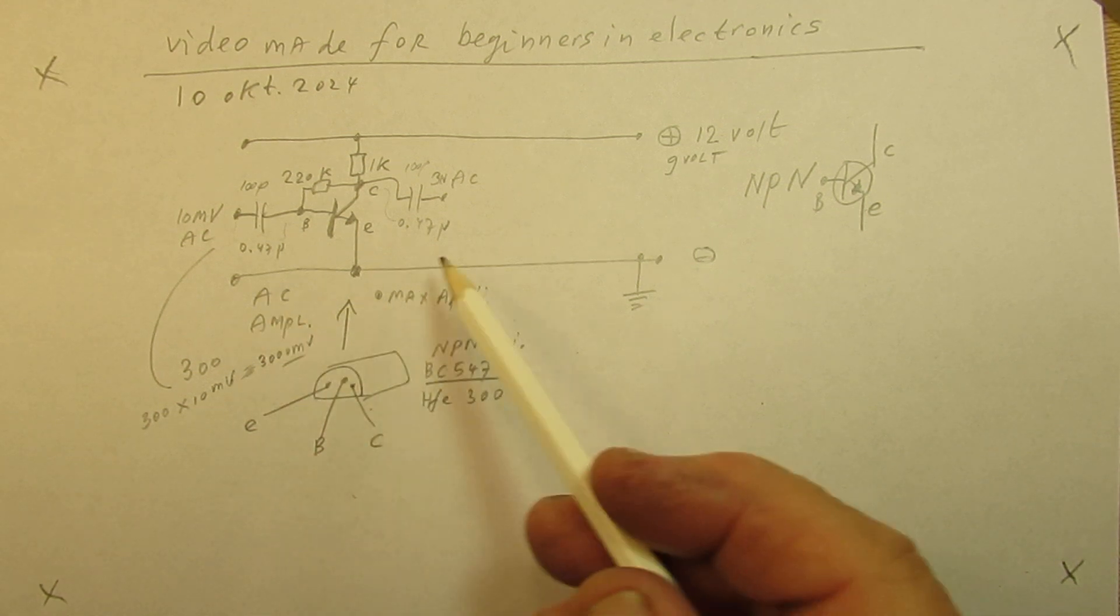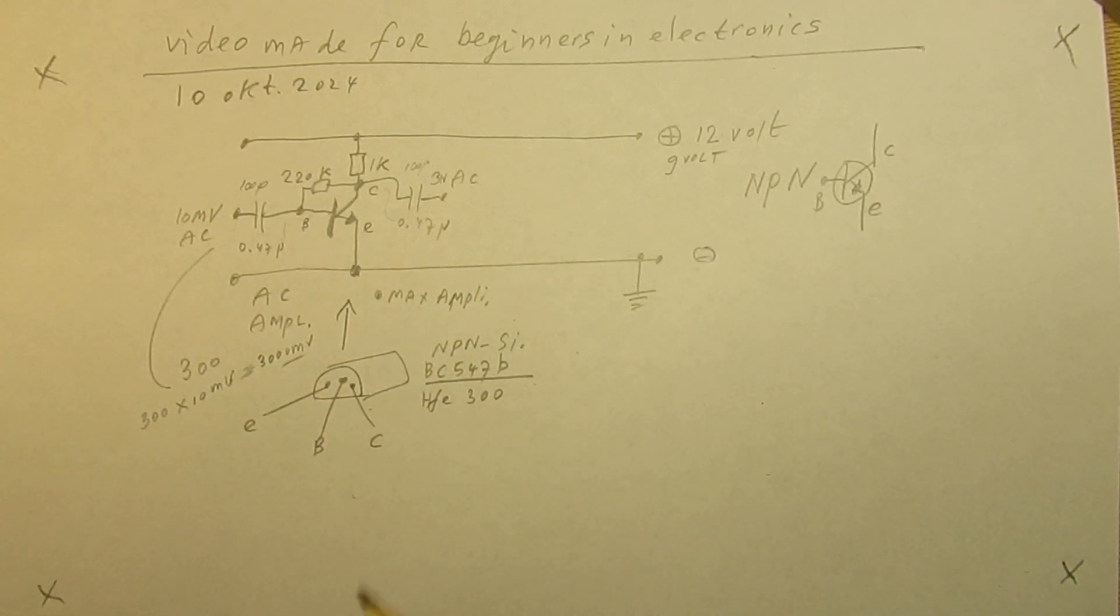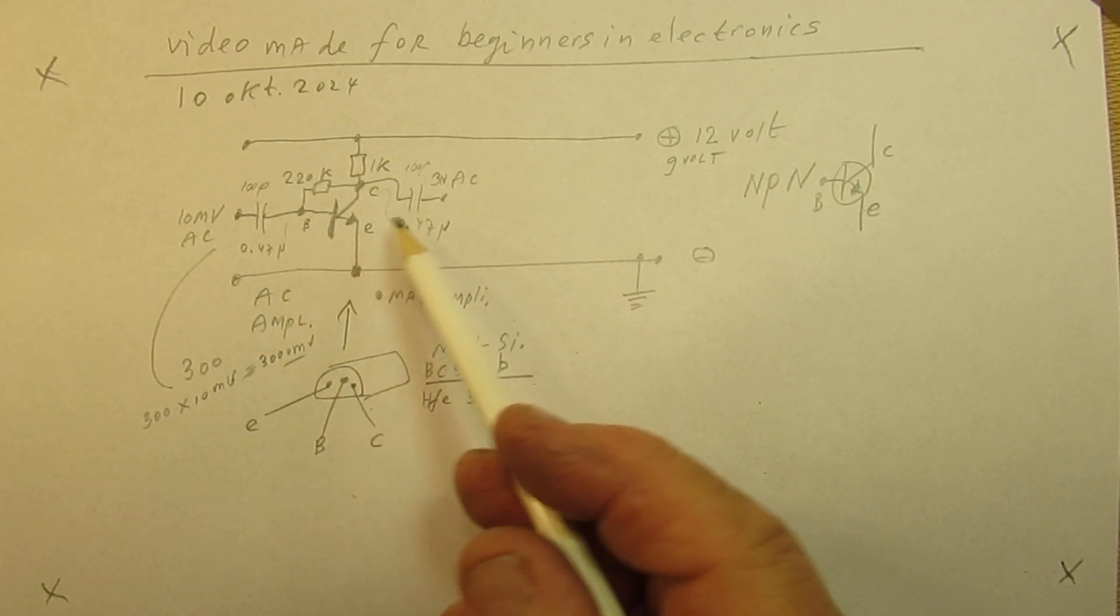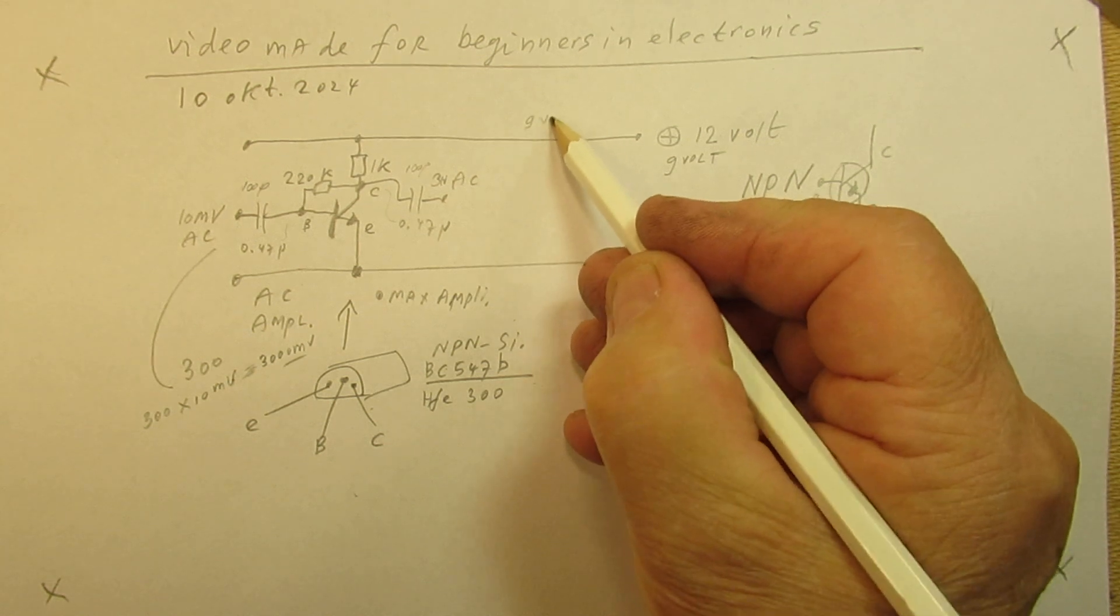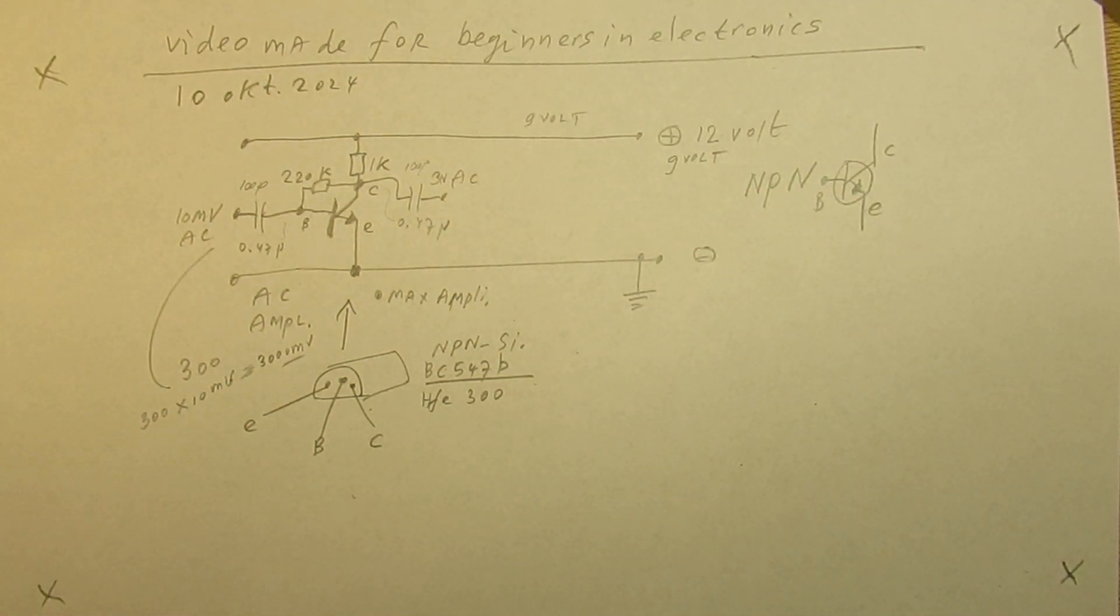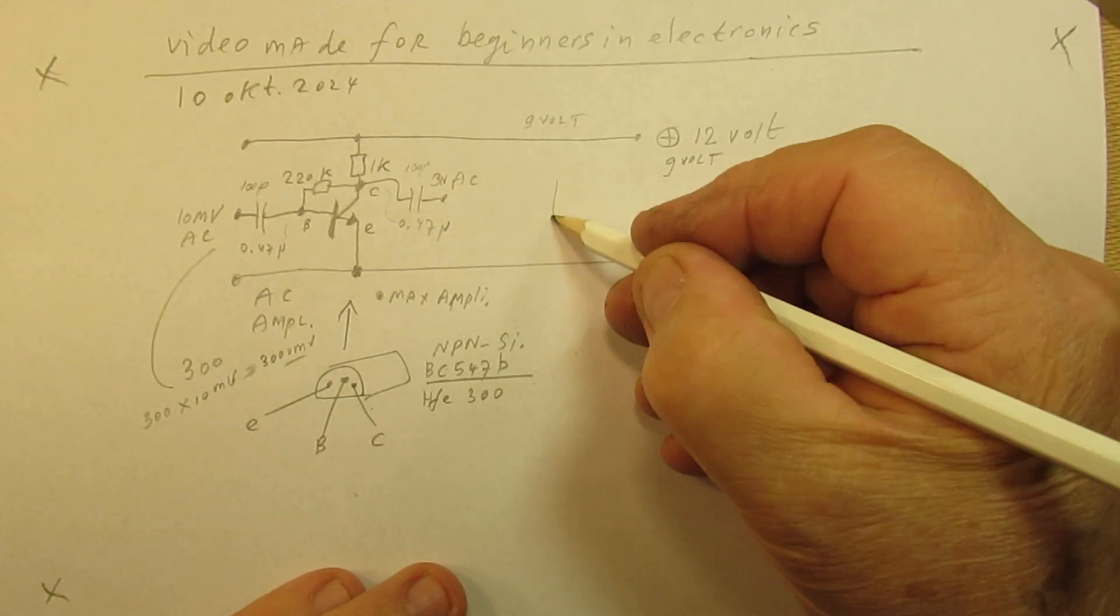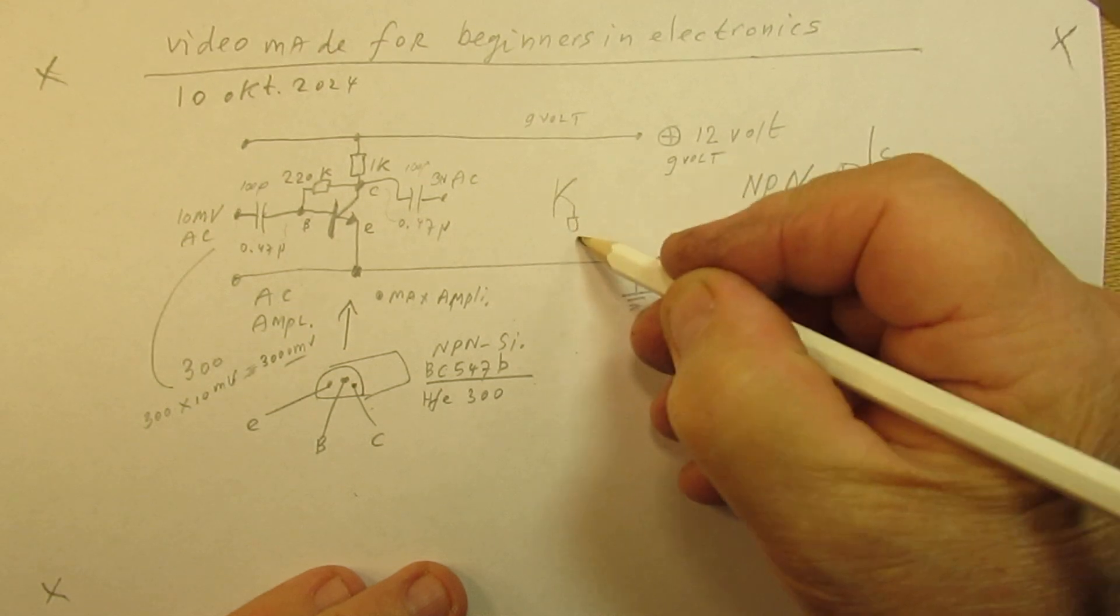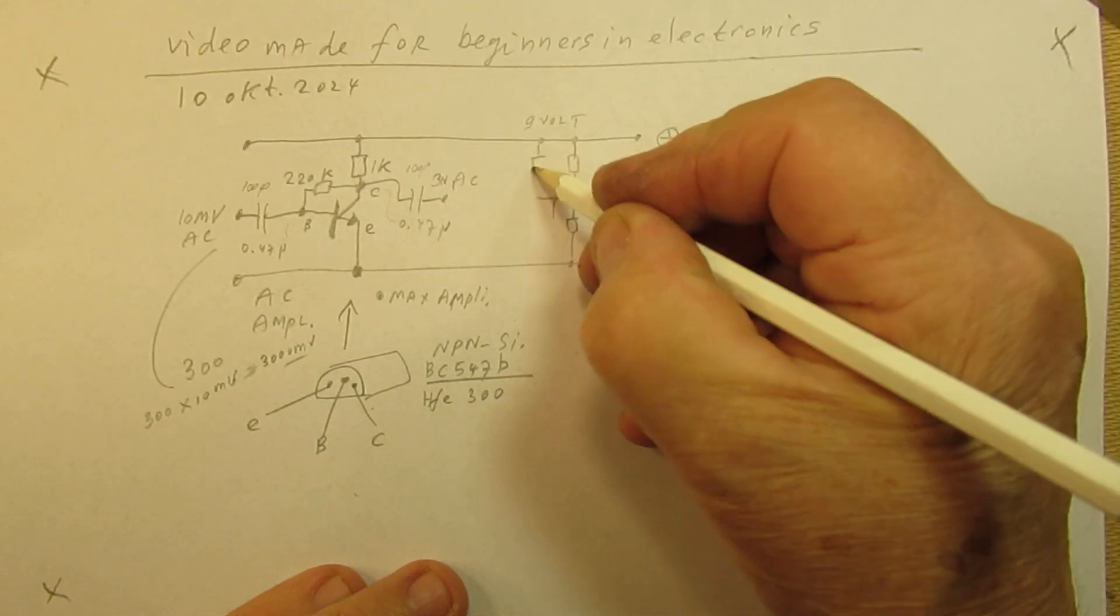In this whole setup I wanted to talk about how to make the most simple audio amplifier or high frequency amplifier that you can use. 9 volts is in this case the best value. There are other videos on my YouTube channel where I have explained the more or less classical grounded emitter amplifier. Let me draw it again.